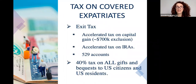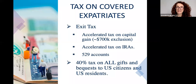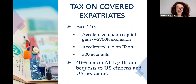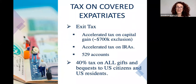The implication of being a covered expatriate is an exit tax — an accelerated tax on any capital gains that accrued on assets while you were in the U.S. There is a roughly $700,000 exclusion on capital gains, so only gains above that amount trigger the accelerated tax. It also accelerates tax on IRAs, 529 accounts, and certain other tax-deferred accounts, deeming them all withdrawn in the year you expatriate — resulting in a potentially high tax bill.